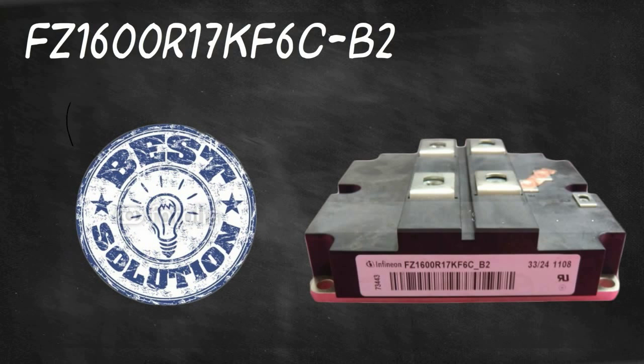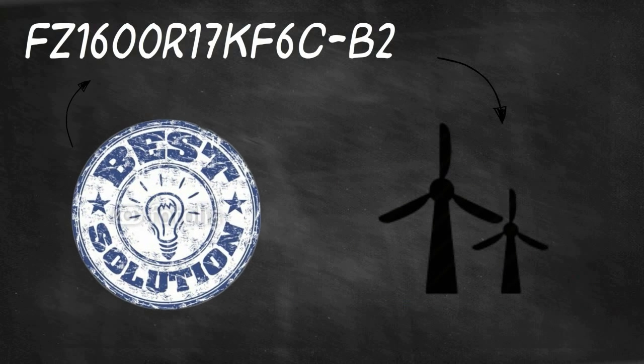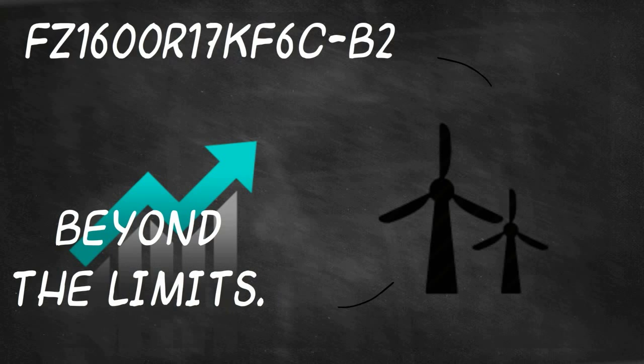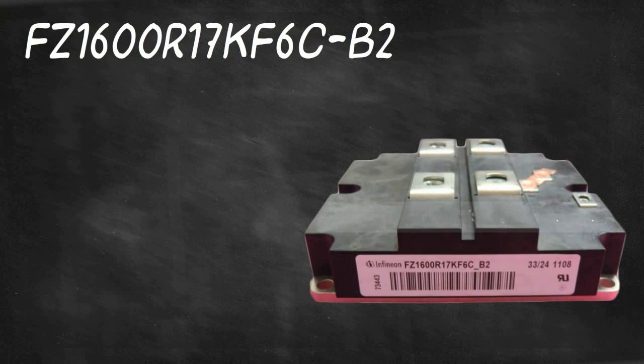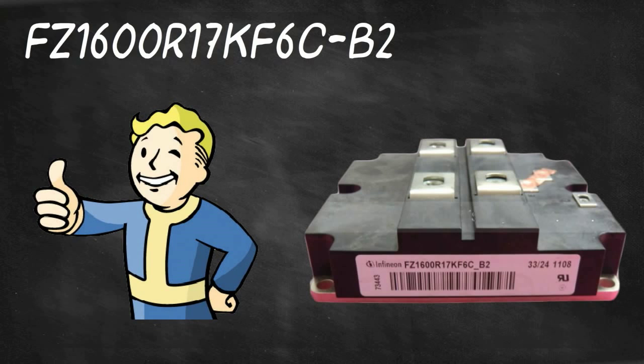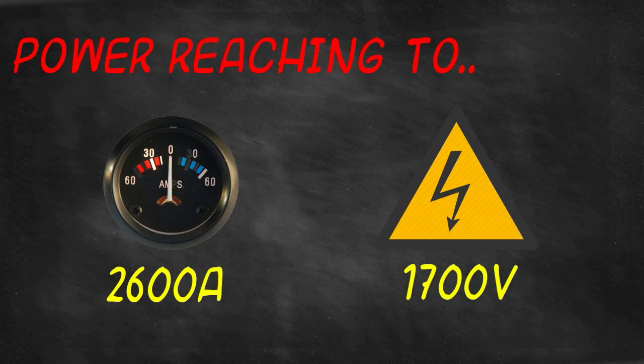FZ1600R17KF6CB2 is the best solution if you want your community's wind turbines to power up beyond the limits. Even with offshore wind turbines, this IGBT transistor module will never let you down. With the power reaching 2600 amps or 1700 volts...